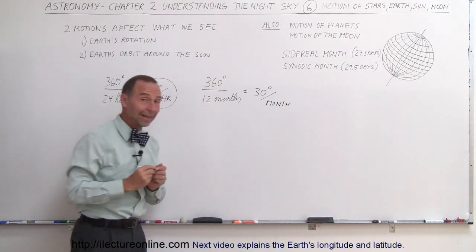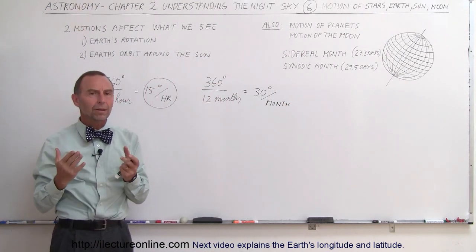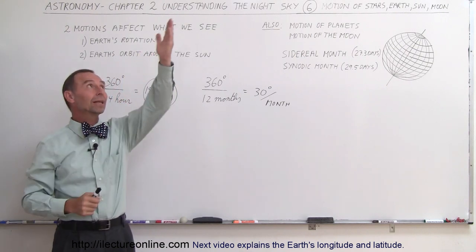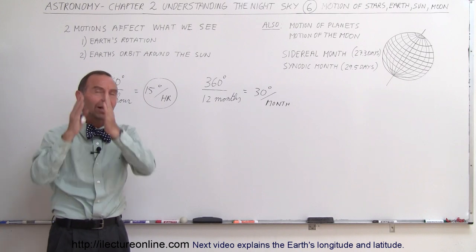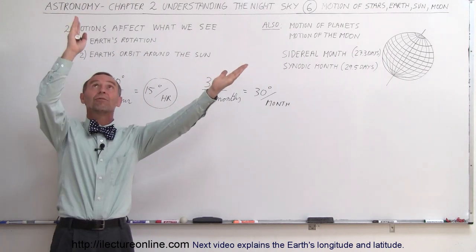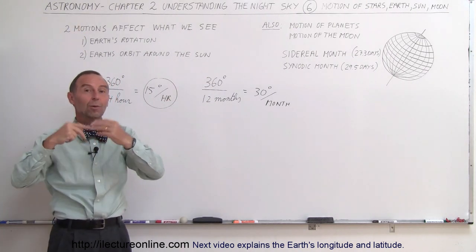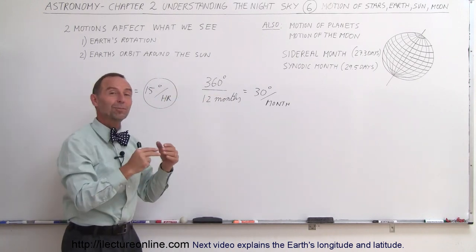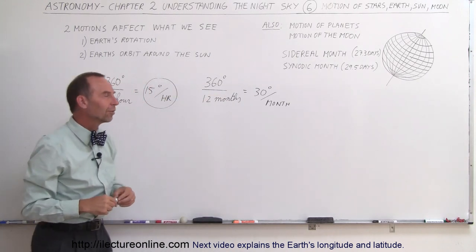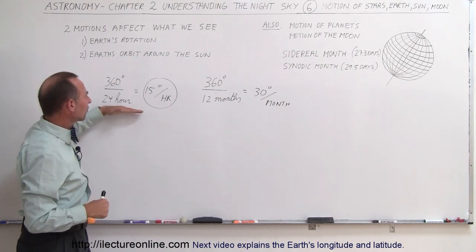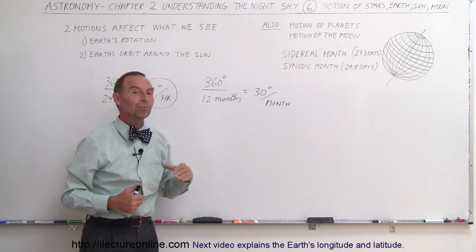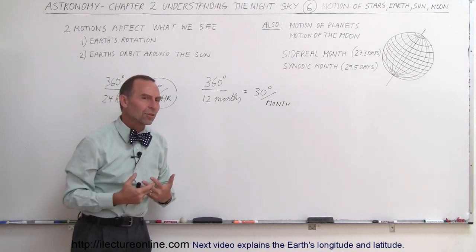Which means that if we saw Vega directly above us at midnight, one month later, it will have moved 30 degrees, and at midnight, it will be at an angle of 30 degrees. Two months later, it will be at an angle of 60 degrees away from the Zenith, and three months later, when we come and look at Vega at midnight, we have to look at the horizon, and we might just be able to catch it before it sinks over the horizon.